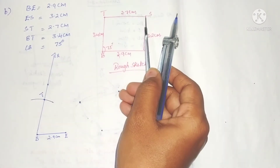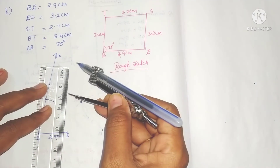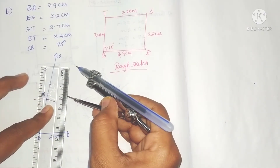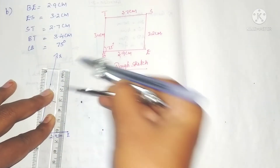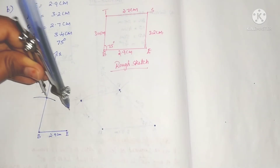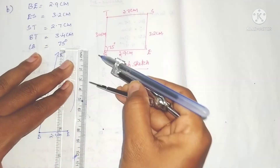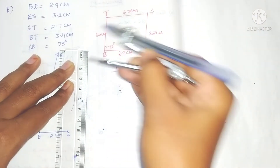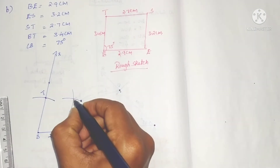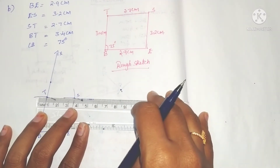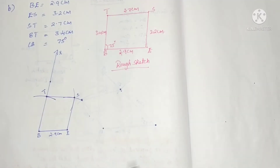Taking T as center, draw an arc with radius 2.7 centimeters — the 7th small line after 2. Similarly, taking E as center draw an arc with radius 3.2 centimeters. The point of intersection of these two arcs is vertex S. Join ES and ST to complete the required quadrilateral BEST.